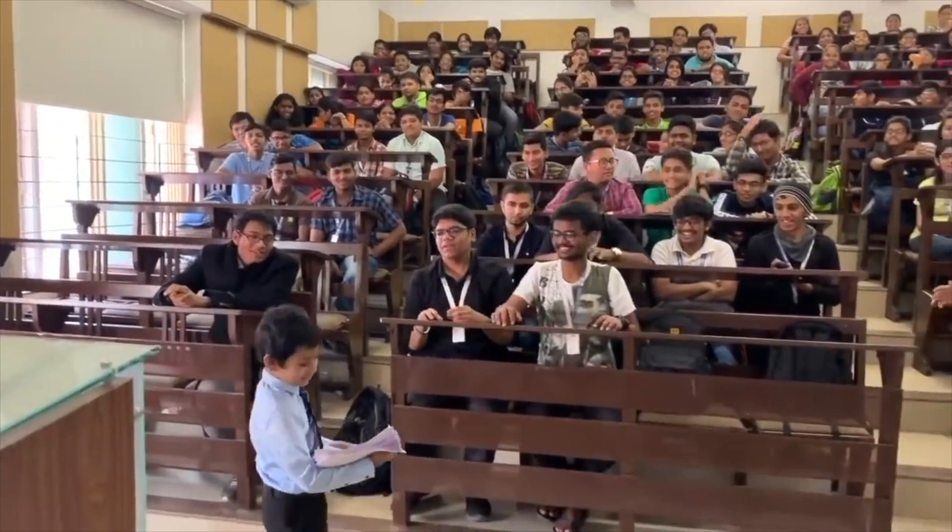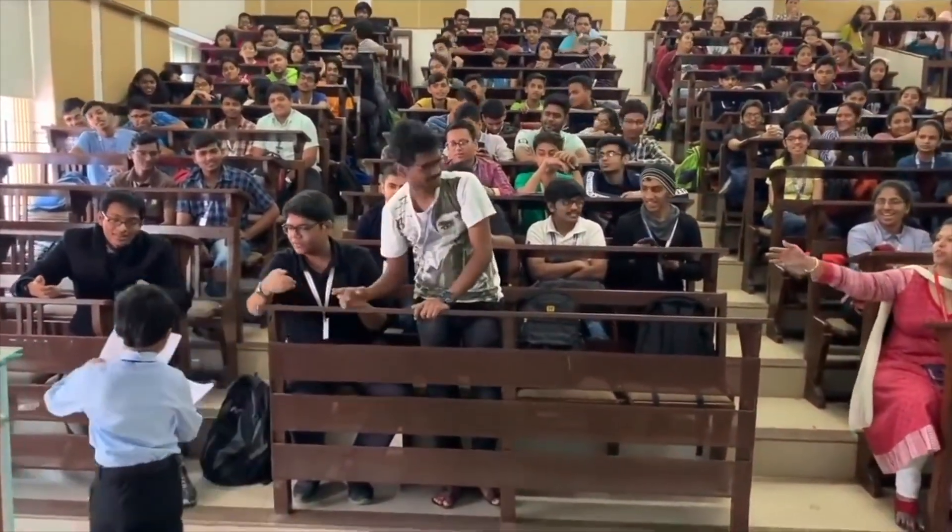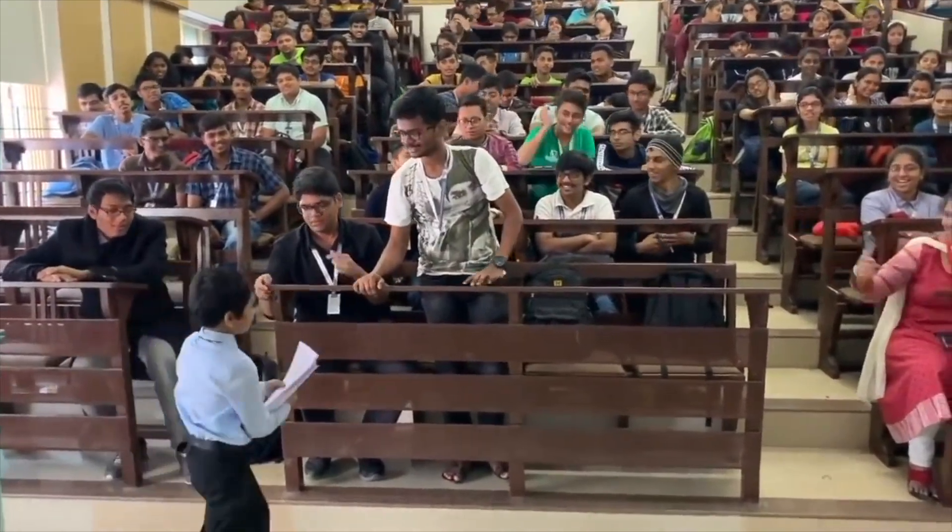We're going to do problem number 3 soon. Soborno Isaac Bari, who is known as the god of mathematics, became the youngest professor in the history of mankind.